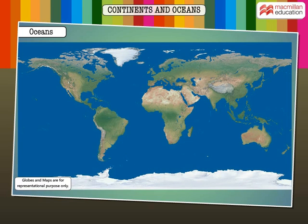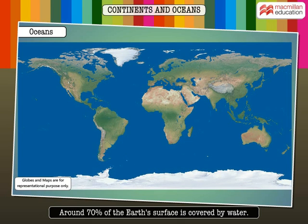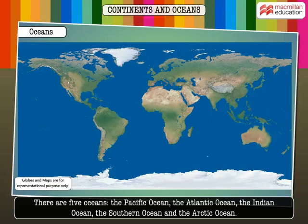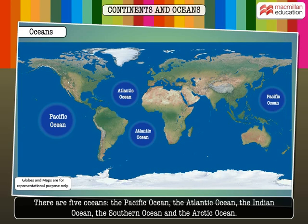Around 70% of the Earth's surface is covered by water. These large water bodies are known as oceans. There are five oceans: the Pacific Ocean, the Atlantic Ocean, the Indian Ocean, the Southern Ocean, and the Arctic Ocean.